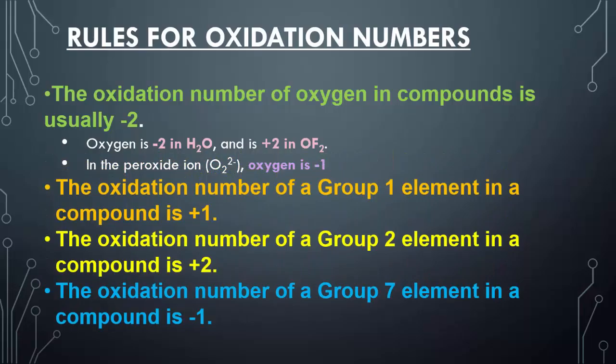If you're a group one element, you always have a positive one charge. If you're a group two element, you always have a positive two charge. And if you're a group seven element — anything like fluorine, chlorine, bromine, iodine — they always have a negative one charge. Just use your reference tables.